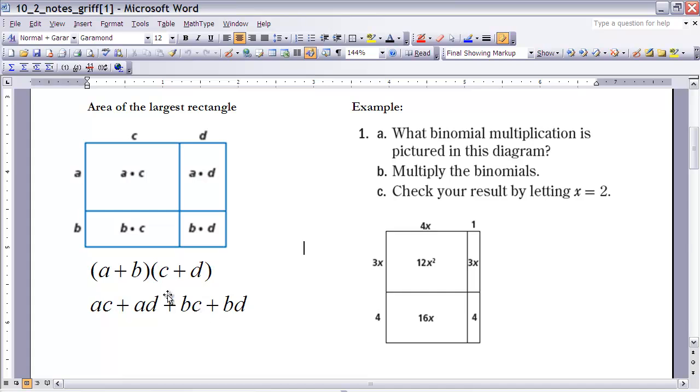Now, if we do our FOIL method, which we've learned in Algebra 1, we come up with the exact same thing. And remember the FOIL method is F for first, O for outer, I for inner, and finally L for last. So here's first, outer, inner, and last. So each one of these represents one of the products of the FOIL method.